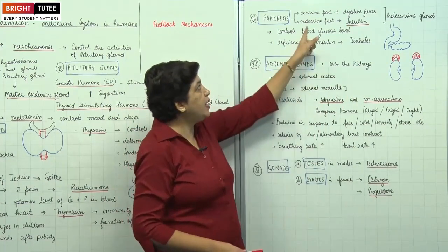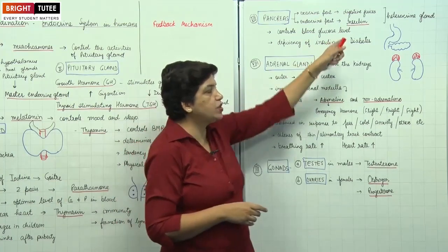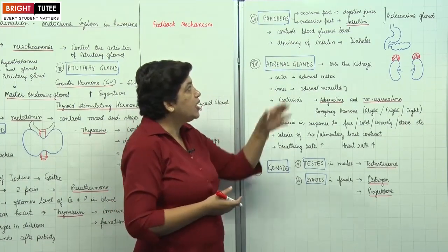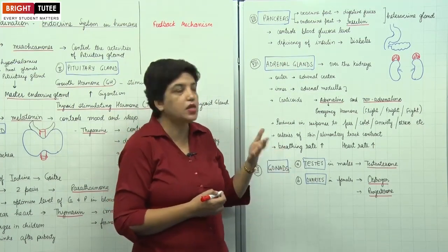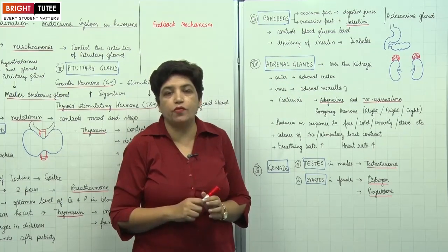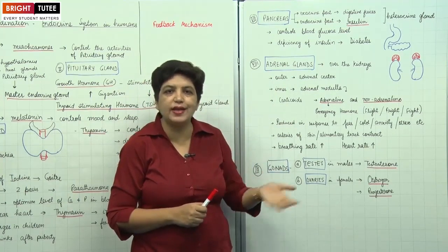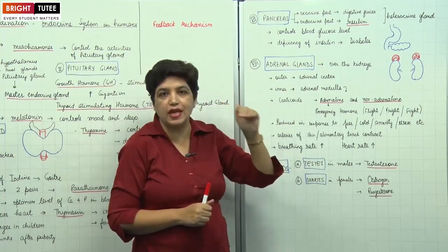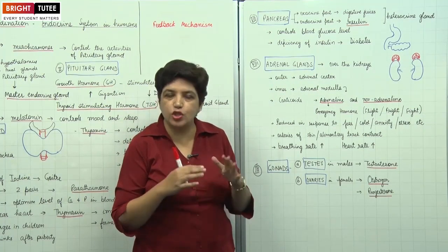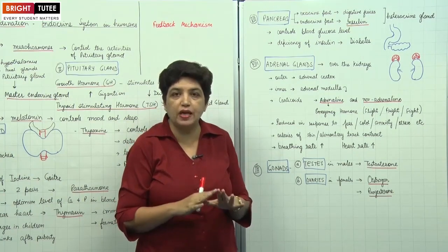The exocrine part of the pancreas secretes digestive juices directly into the duodenum, helping in digestion of nutrients. The endocrine part releases the hormone insulin into the blood, which controls the level of glucose or sugar in the blood. If there is a deficiency of insulin, the glucose level in the blood increases — this condition is known as diabetes. High glucose levels can have harmful effects on organs like the brain, kidney, and liver. Patients with diabetes are either given hypoglycemic medicines or insulin injectables before meals to maintain the right glucose level.